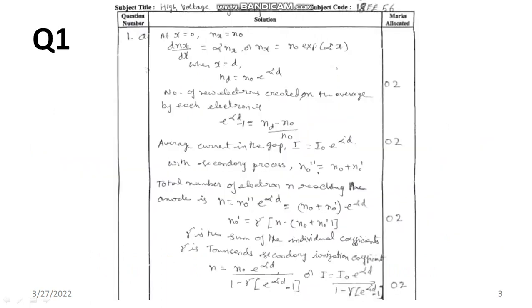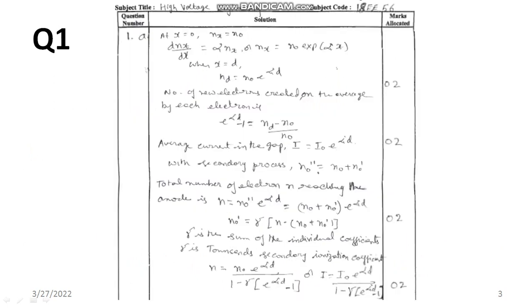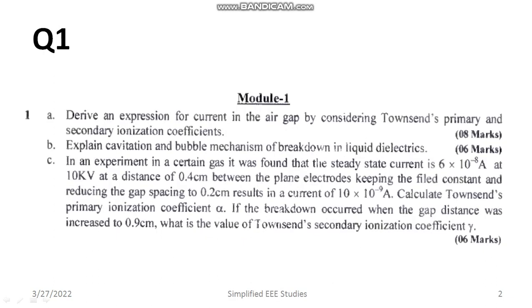The first question was derive an expression for Townsend's current growth equation by considering secondary ionization coefficient. You can have a division of marks. Step by step you have to follow. Each step has certain weightage. The second question is cavitation and bubble theory. At least you have to add six points. Each point carrying one mark.